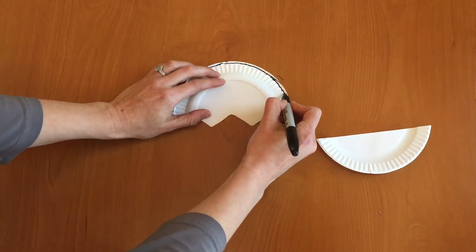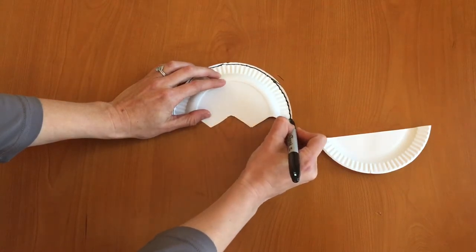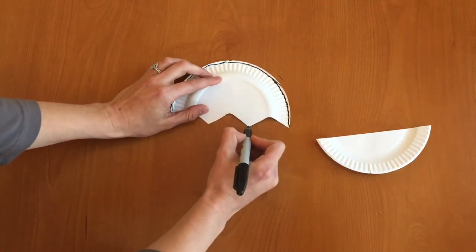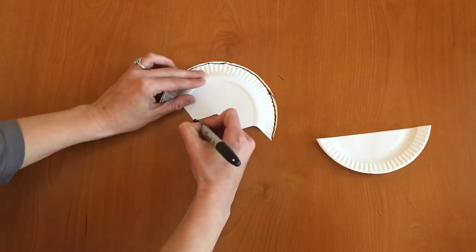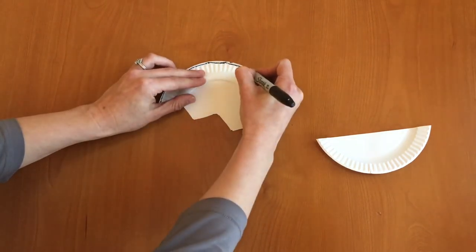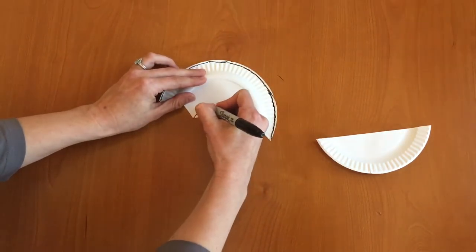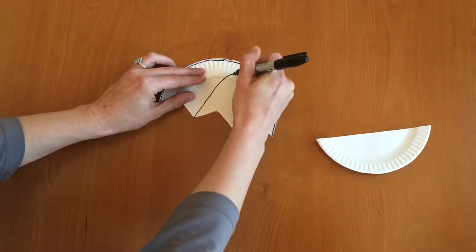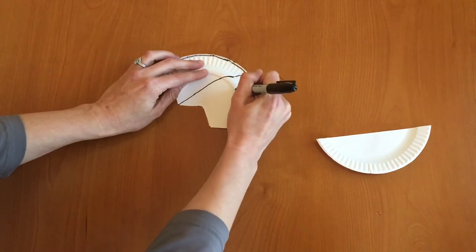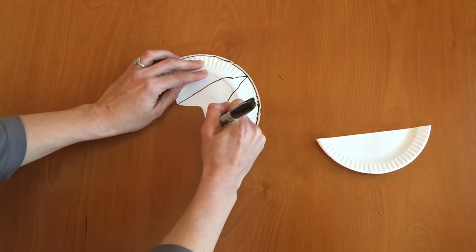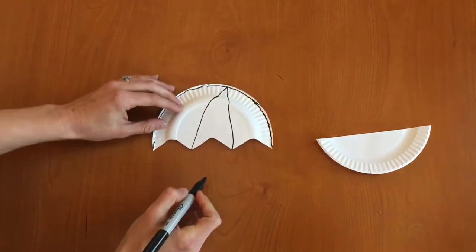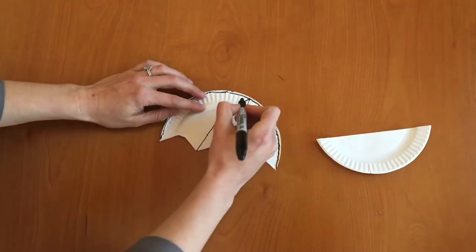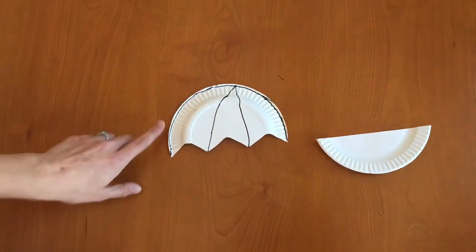That's okay if we get a little on the table, we can clean that up later, so all the way around and then I'm going to start from one and just go up to the middle. Perfect! So now I've got my umbrella with its points on it.